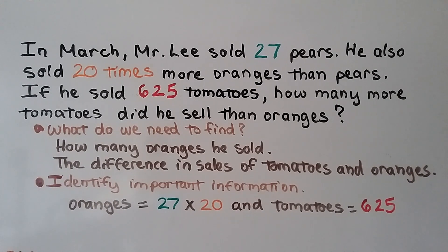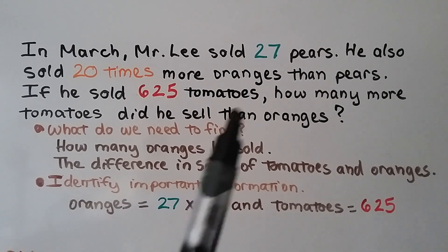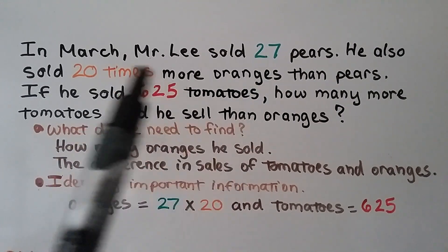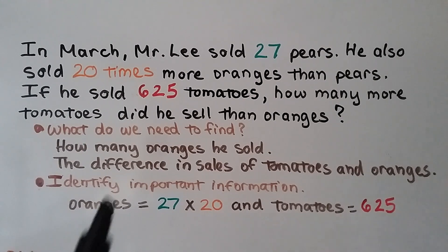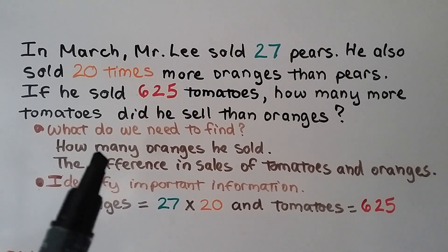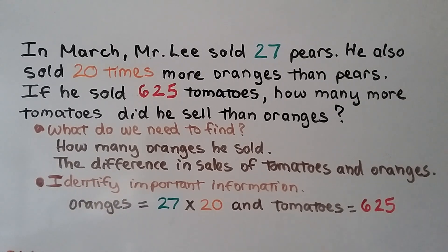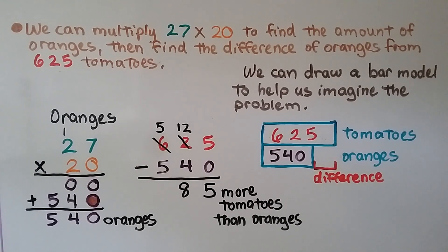In March, Mr. Lee sold 27 pears. He also sold 20 times more oranges than pears. If he sold 625 tomatoes, how many more tomatoes did he sell than oranges? We know he sold 27 pears, but he sold 20 times more oranges than pears, so we multiply these two together to find the amount of oranges. He sold 625 tomatoes. We need to find how many oranges he sold using multiplication, then find the difference in sales of tomatoes and oranges. Oranges equal 27 times 20, and tomatoes are 625.